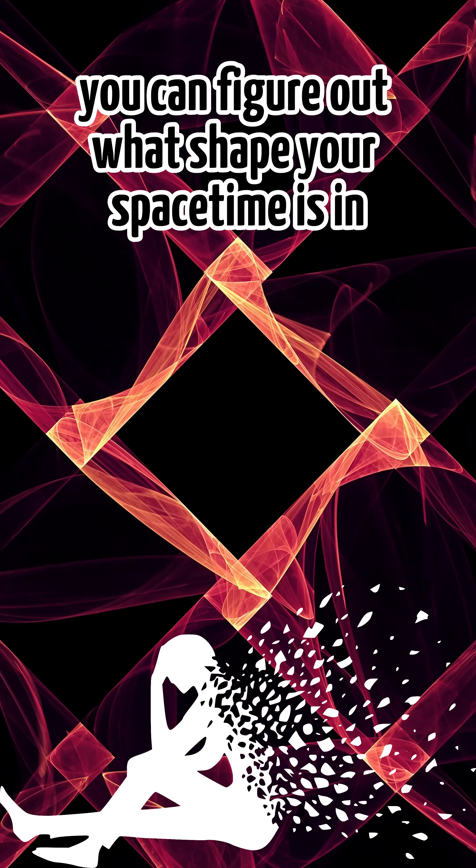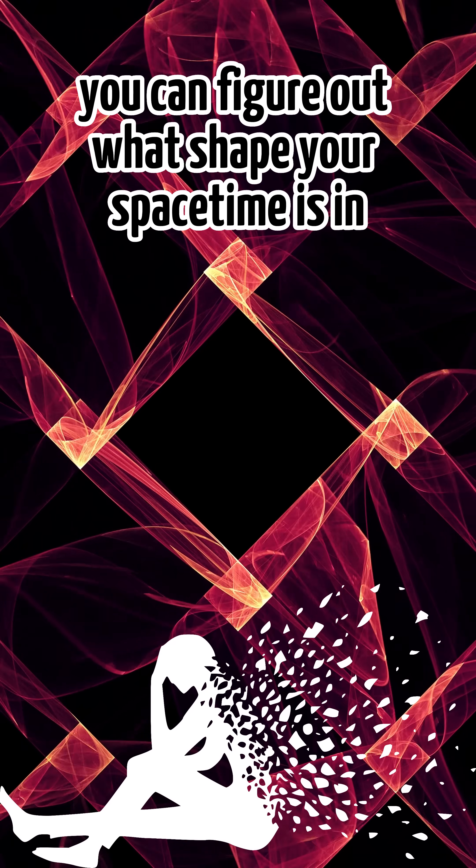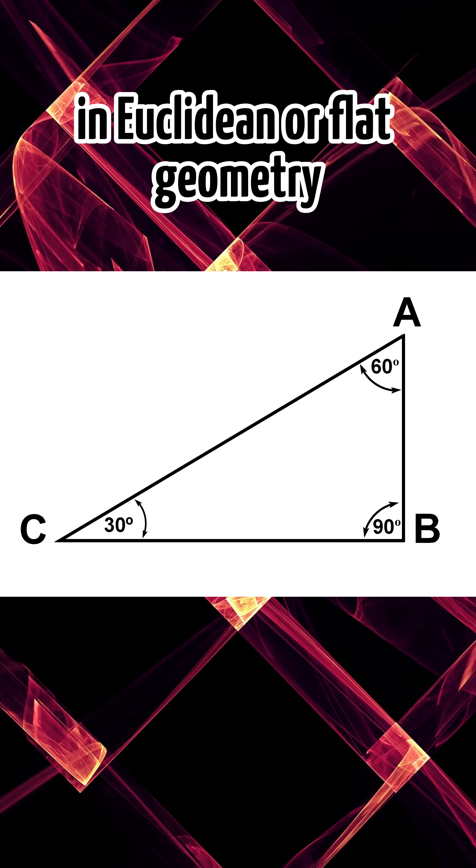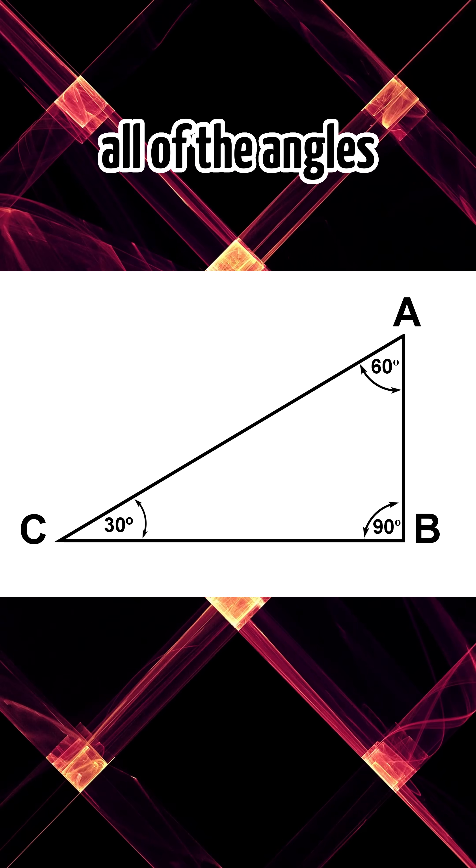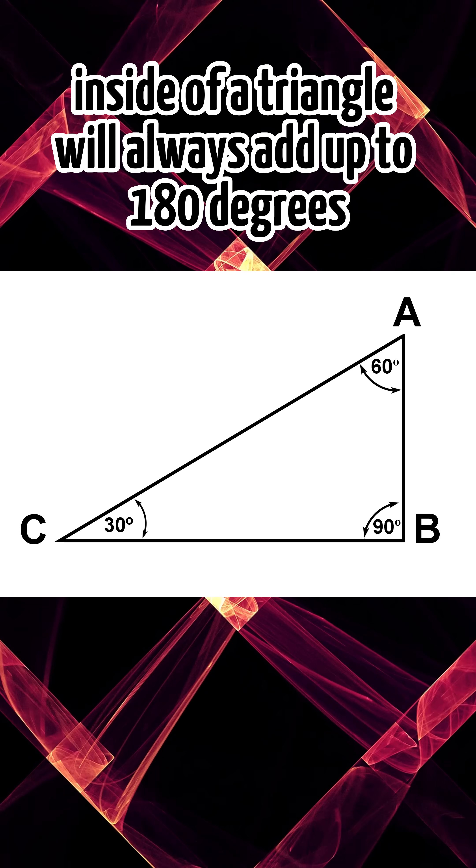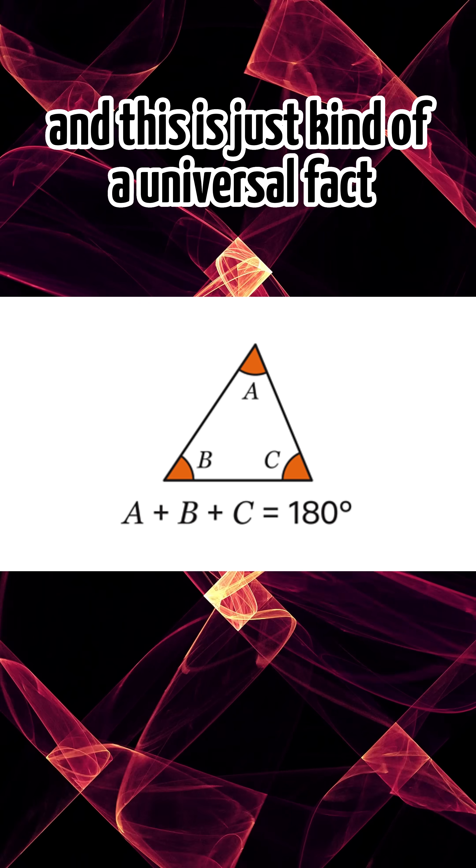You can figure out what shape your spacetime is in by drawing a triangle. In Euclidean or flat geometry, the type you're used to, all of the angles inside a triangle will always add up to 180 degrees. This is a universal fact.